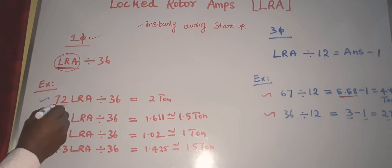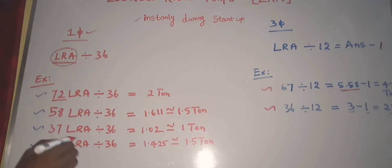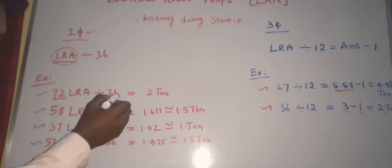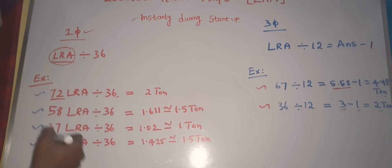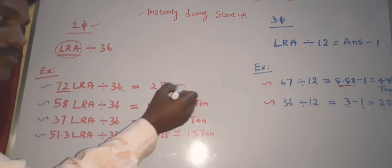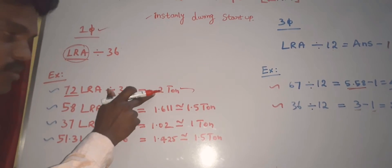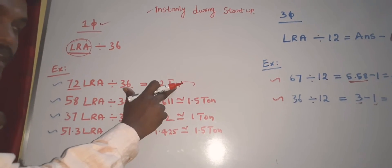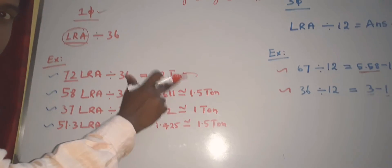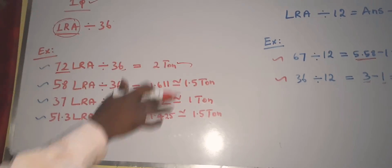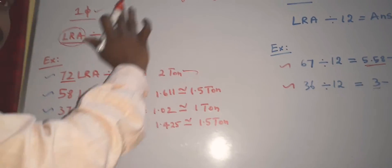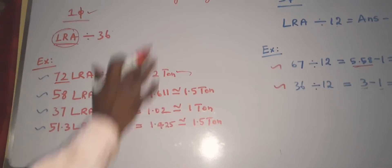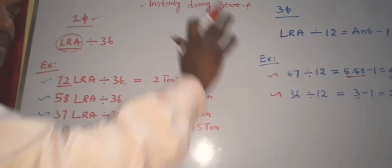For this example, 72 LRA — 72 LRA — it's developed with 36, and that gives the answer. LRA is related to Tonnage. In terms of compressor, I am using this example.